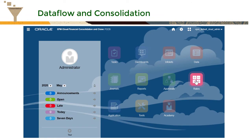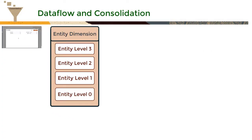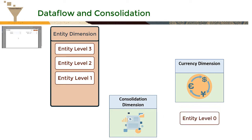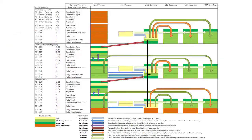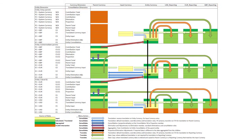When a consolidation is launched for a selected point of view, from the rules card or a data entry form, all entities in scope are identified and sequenced, and the consolidation process is executed through the consolidation dimension, currency dimension for multi-currency applications, and entity dimension period by period. Members from both the consolidation and currency dimensions are used to hold the different values for each entity as the consolidation routine is performed on the organization structure.